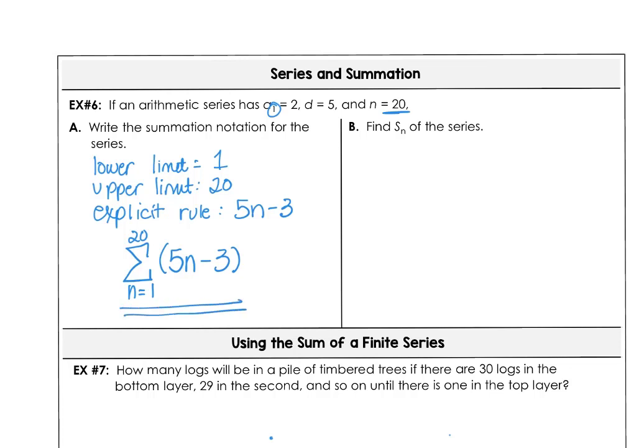Then s sub n of the series, the sum of the series, there's 20 terms. The first 20 terms add up to be 2 is the first term. And then what's the 20th term? 5 times 20, that's 100, minus 3, which is 97. So 2 plus 97 is 99. And 20 divided by 2 is 10. So the sum of our arithmetic series is 990.